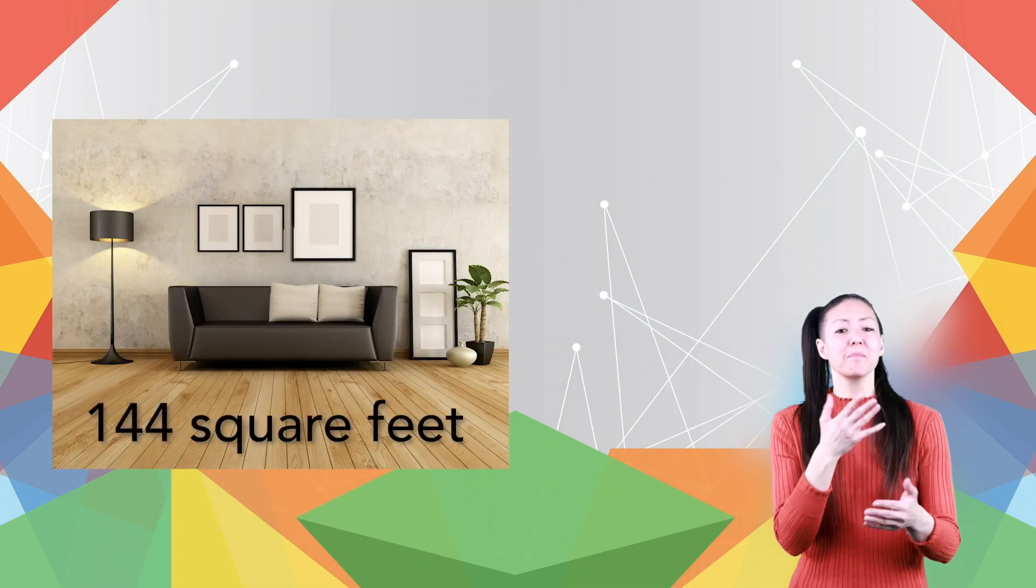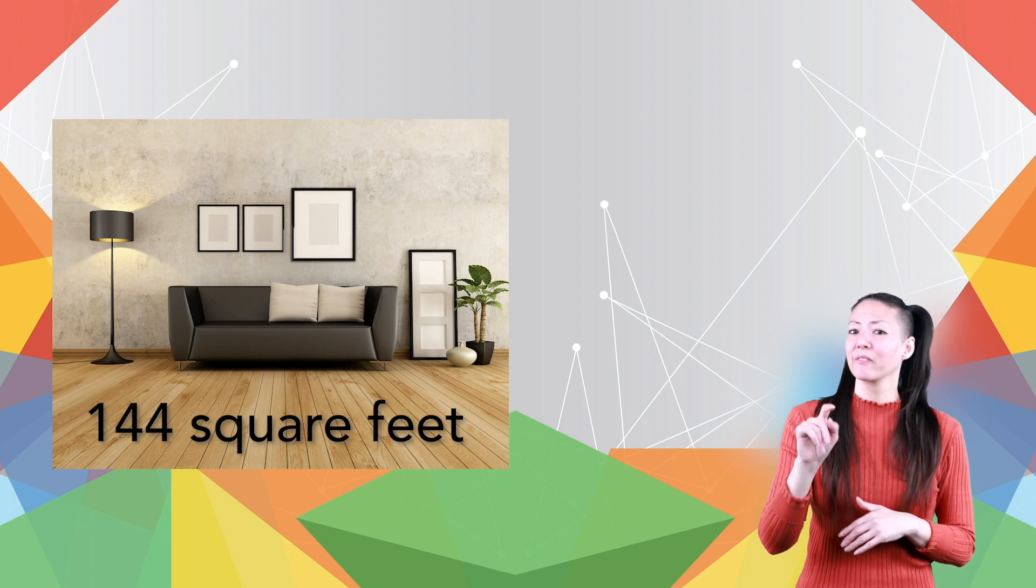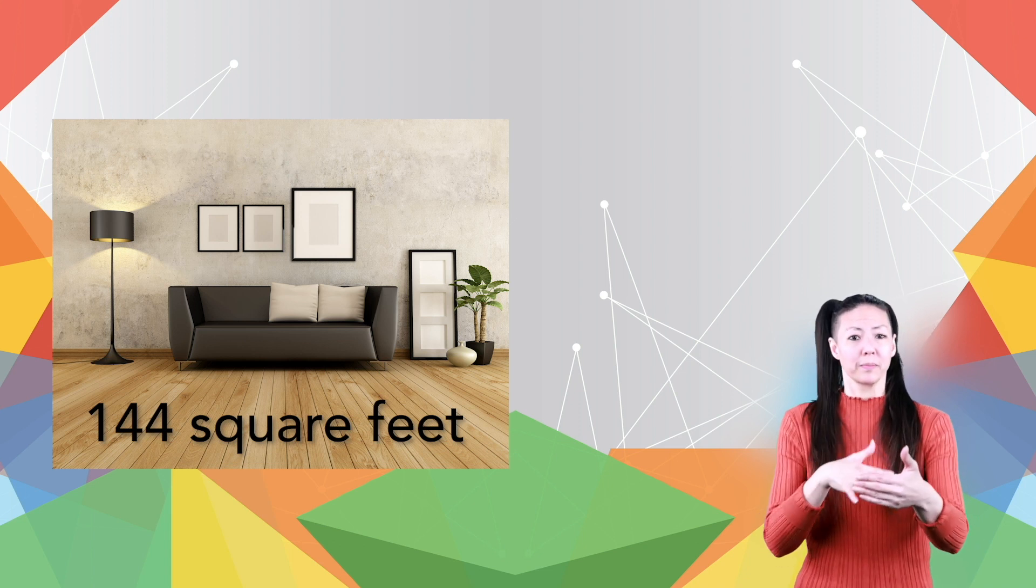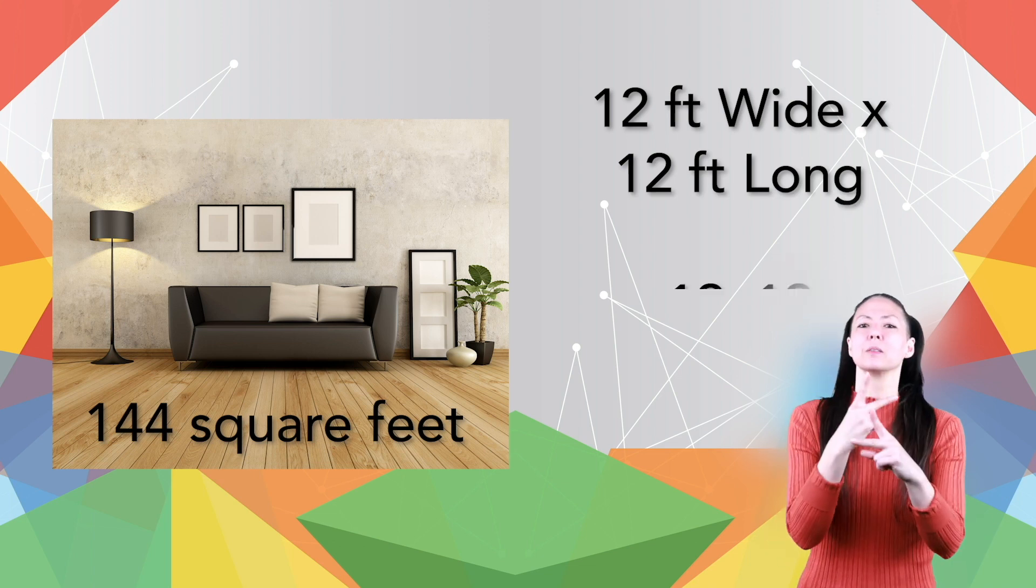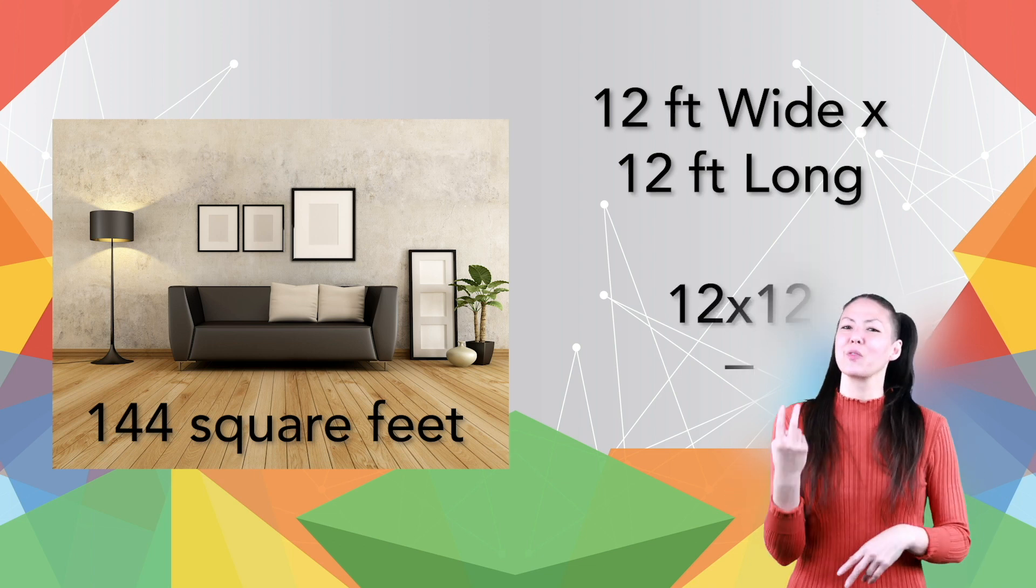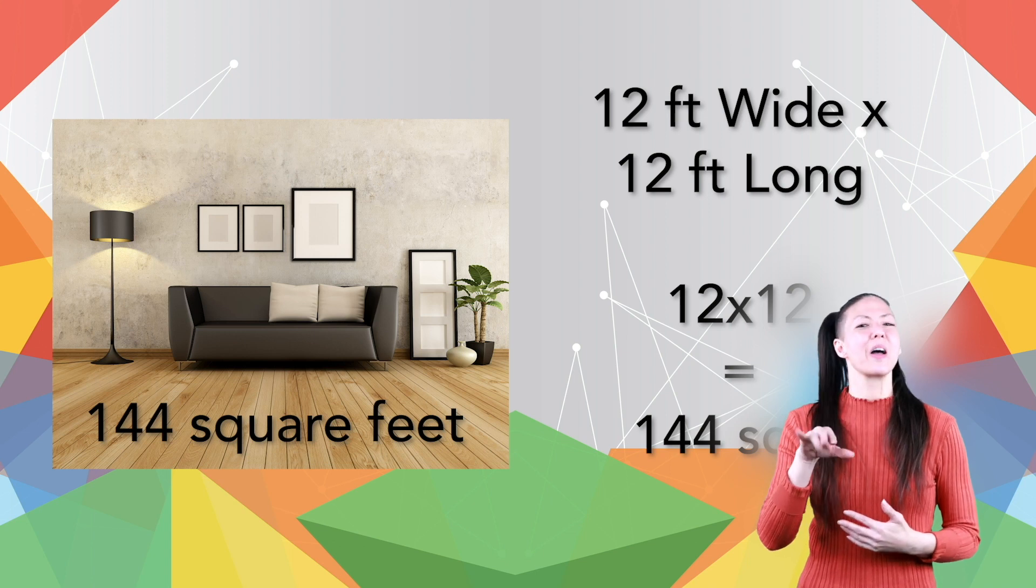The area of a small room in a house might be 144 square feet. If the room is square, then the room is 12 feet wide by 12 feet long. Multiply the sides together, 12 times 12, and you get 144 square feet.